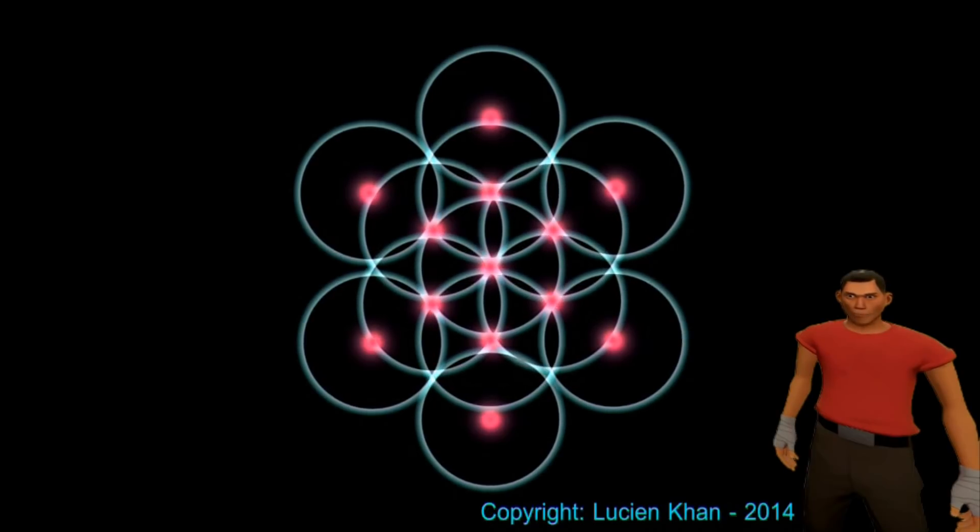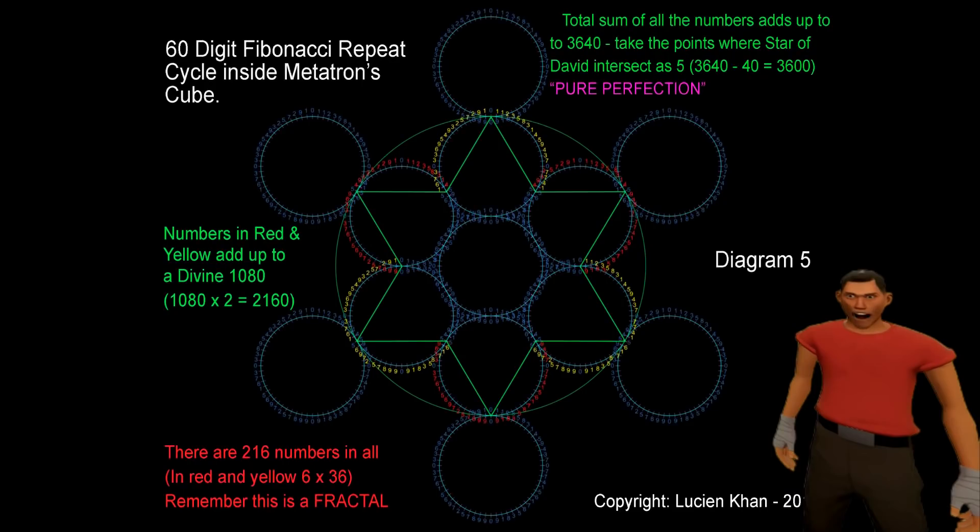Here in Metatron's cube, at the heart of which lies the star of David, we have a matrix of 216 numbers. And in the Kabbalah, it is believed that God's secret name has 216 letters.